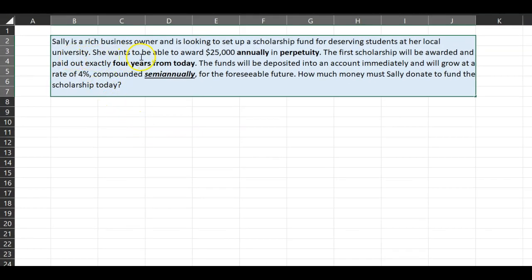So consider Sally. Sally is a rich business owner looking to set up a scholarship fund for deserving students at her local university. She wants to be able to award $25,000 annually in perpetuity, so that means forever. The first scholarship will be awarded and paid out exactly four years from today. The funds will be deposited into an account immediately and will grow at a rate of 4% compounded semi-annually. How much money must Sally donate to fund the scholarship today?